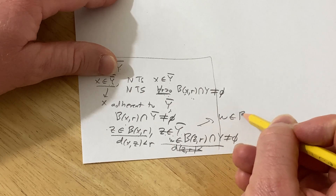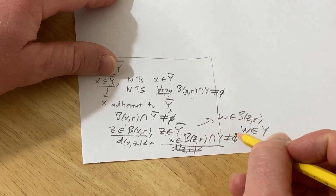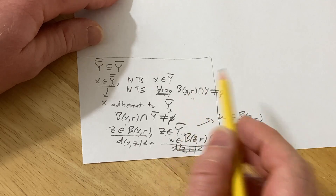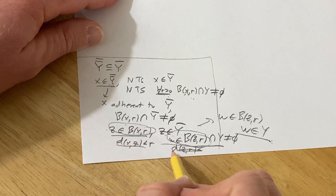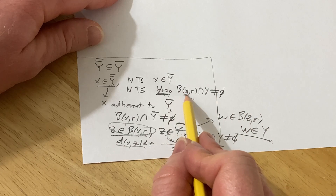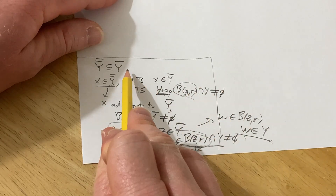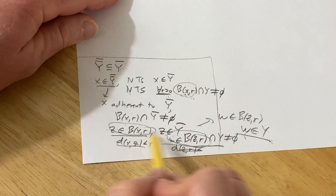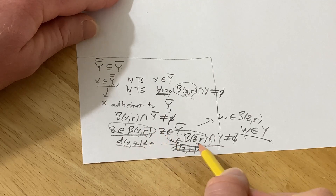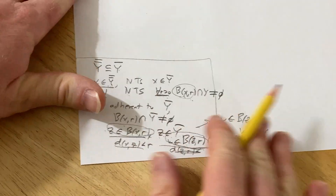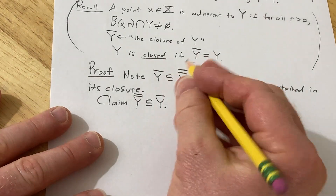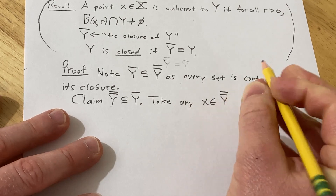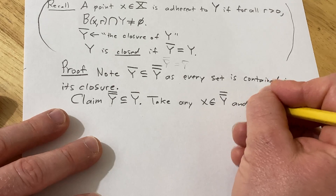So take any x in the closure of the closure of Y, and let r be a positive number. Our goal is to show B(x,r) intersected with Y is non-empty. Since x is in the closure of closure(Y), x is adherent to the closure of Y. So the open ball centered at x of radius r/2 intersected with the closure of Y is not empty. Hence there exists some element z in this intersection, meaning z is in B(x, r/2) and z is in closure(Y).